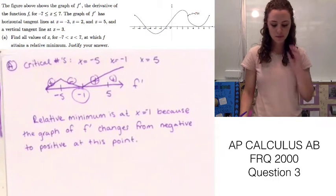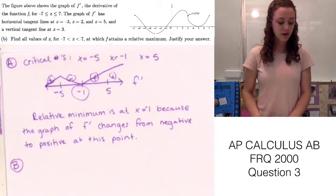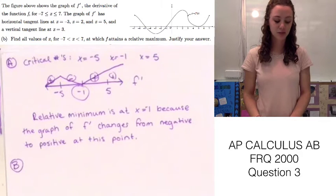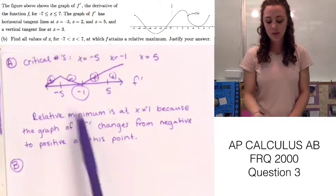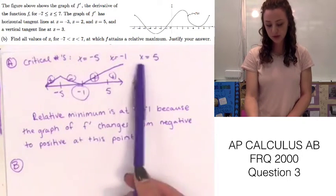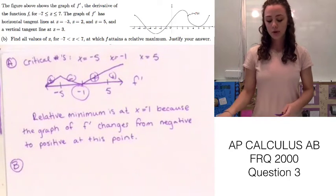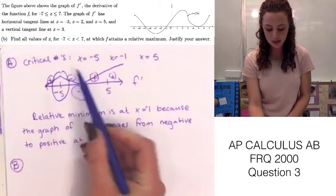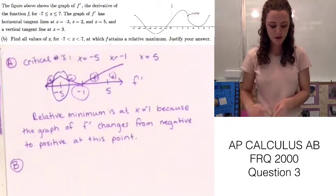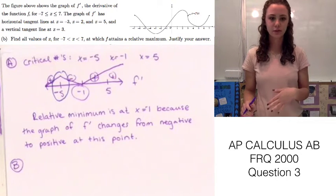Let's move to Part B, and we can use some work from Part A. Part B asks us to find all values of x between negative 7 and 7 at which f attains a relative maximum, and justify our answer. The critical values are still the same since we're working with the same graph. This time we're looking for a relative maximum, which occurs where f prime shifts from positive to negative — that happens at x equals negative 5.